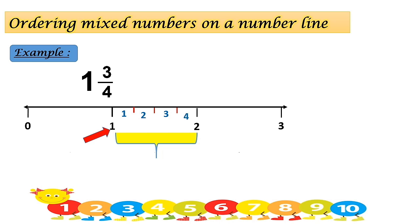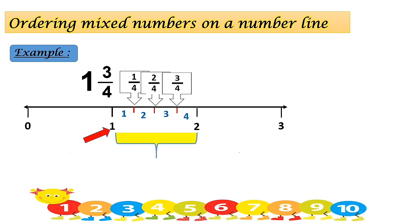Now we are done with the denominator. We look at the number at the top of the fraction — the numerator. The first red line is one quarter, the second line is two quarters, so the third line is three quarters.